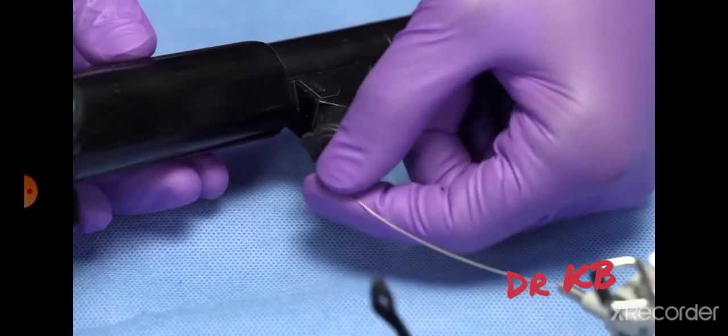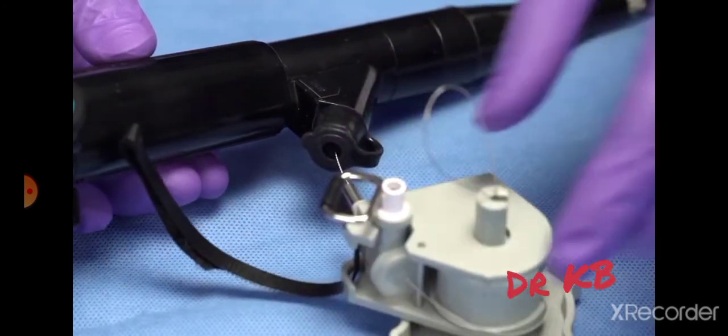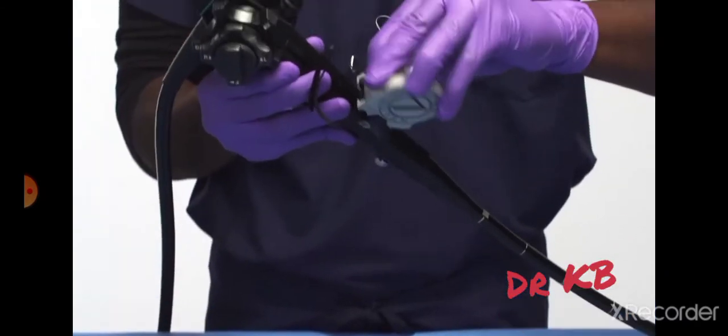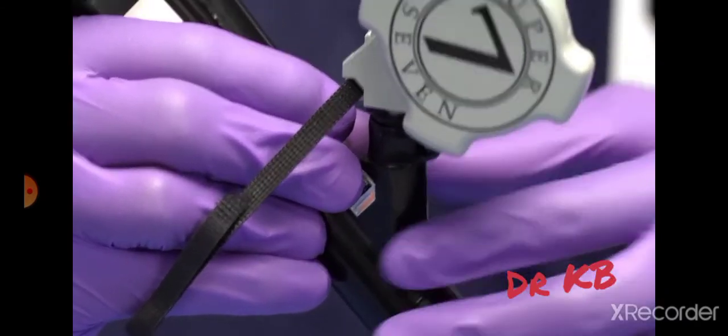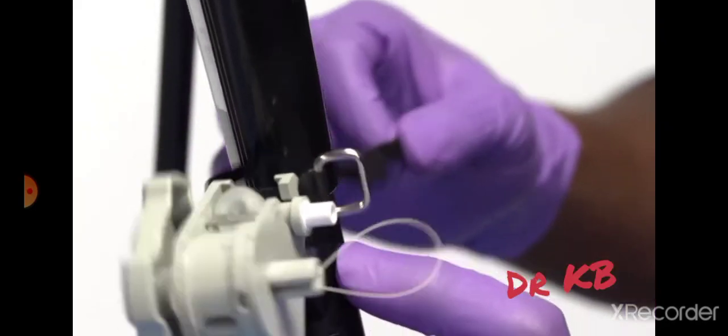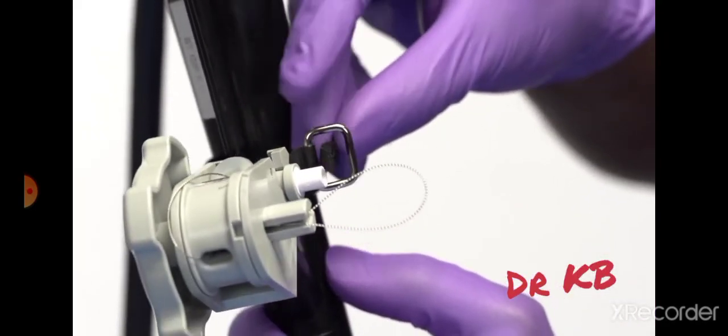Firmly insert the handle unit into the biopsy valve onto the stem of the handle unit. Install the handle unit into the biopsy opening of the endoscope. Secure the handle to the endoscope with the strap.